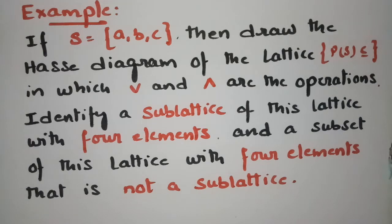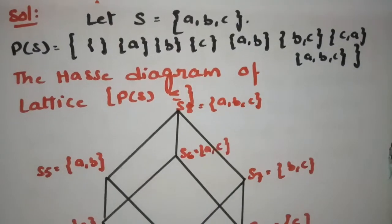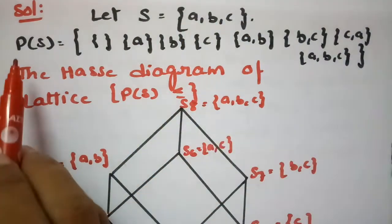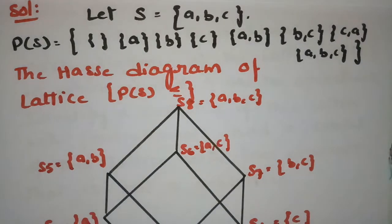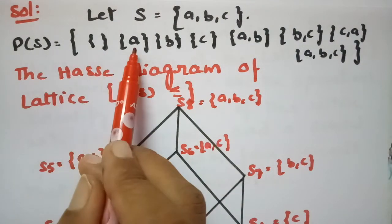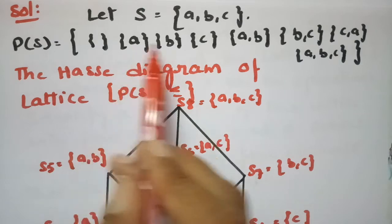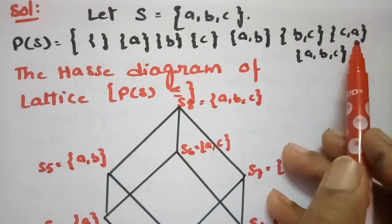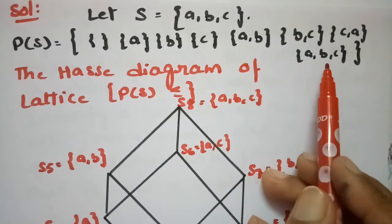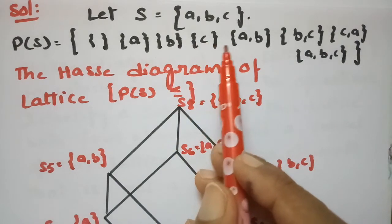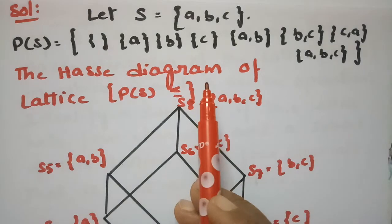For the solution, S is given as {A, B, C} and the set of all subsets is: null set, singleton sets {A}, {B}, {C}, then {A,B}, {B,C}, {C,A}, and {A,B,C}. These are all the possible subsets (the power set), and with this we have to draw the Hasse diagram.